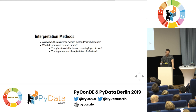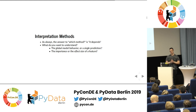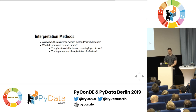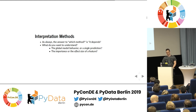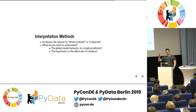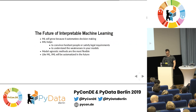The answer to which method you should use always depends. Some methods explain global model behavior — feature importance and partial dependence plots look at the entire model. Others explain a single prediction — Shapley values. Depending on what you want to understand, you use different methods. It also matters whether you want to know the importance of a feature (like gender) versus the effect size of a feature (like temperature and humidity).